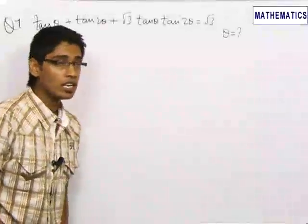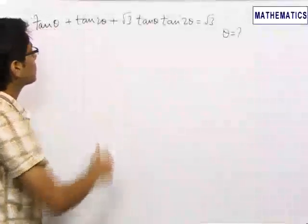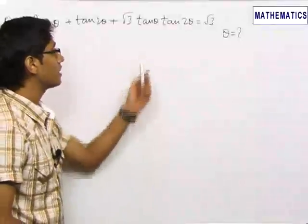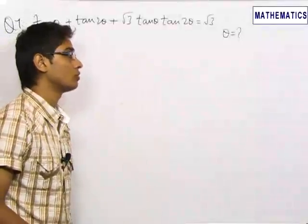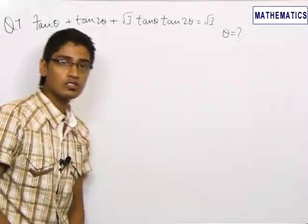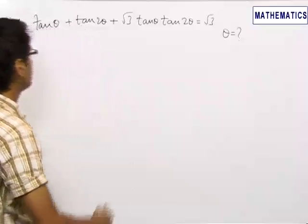In our seventh problem, we are given the equation tan θ + tan 2θ + √3 tan θ tan 2θ = √3. And we want to find the general values of θ satisfying the given equation.